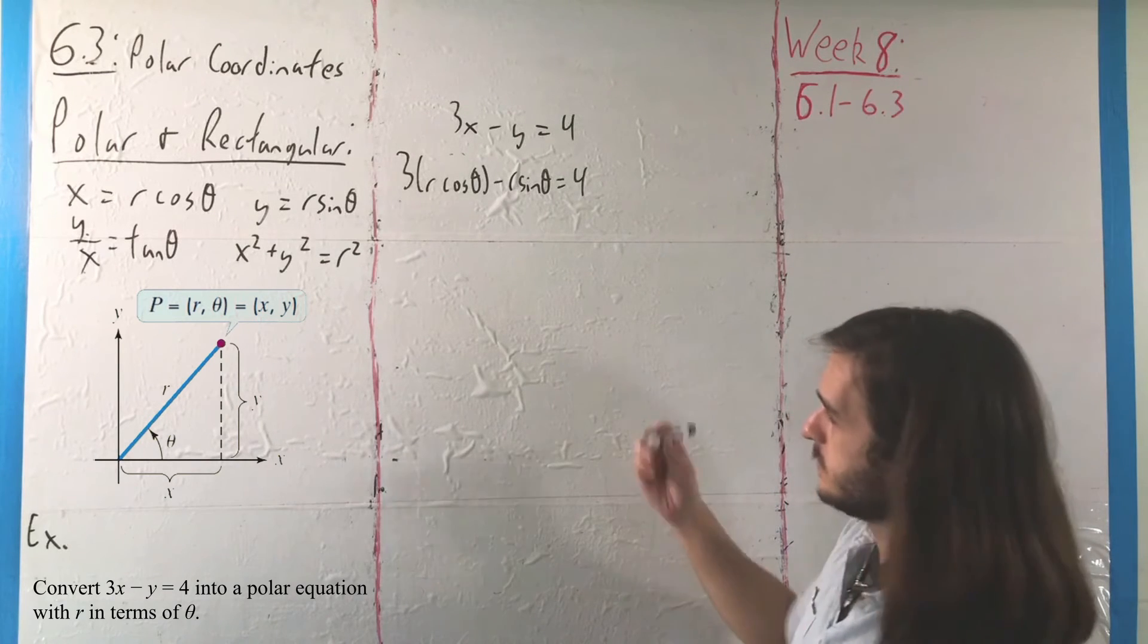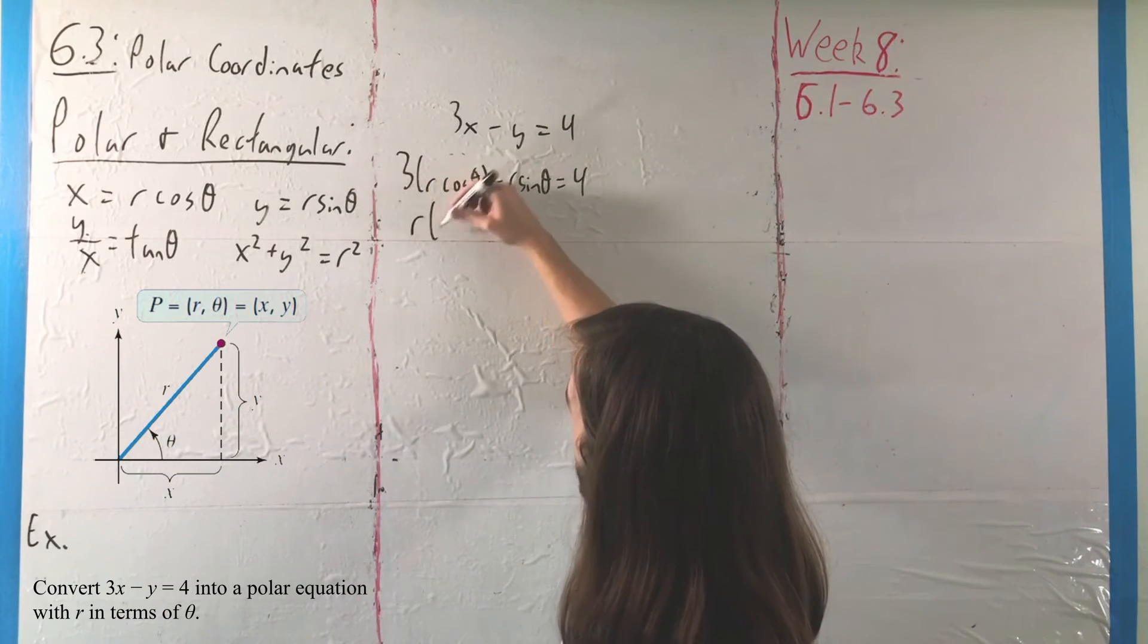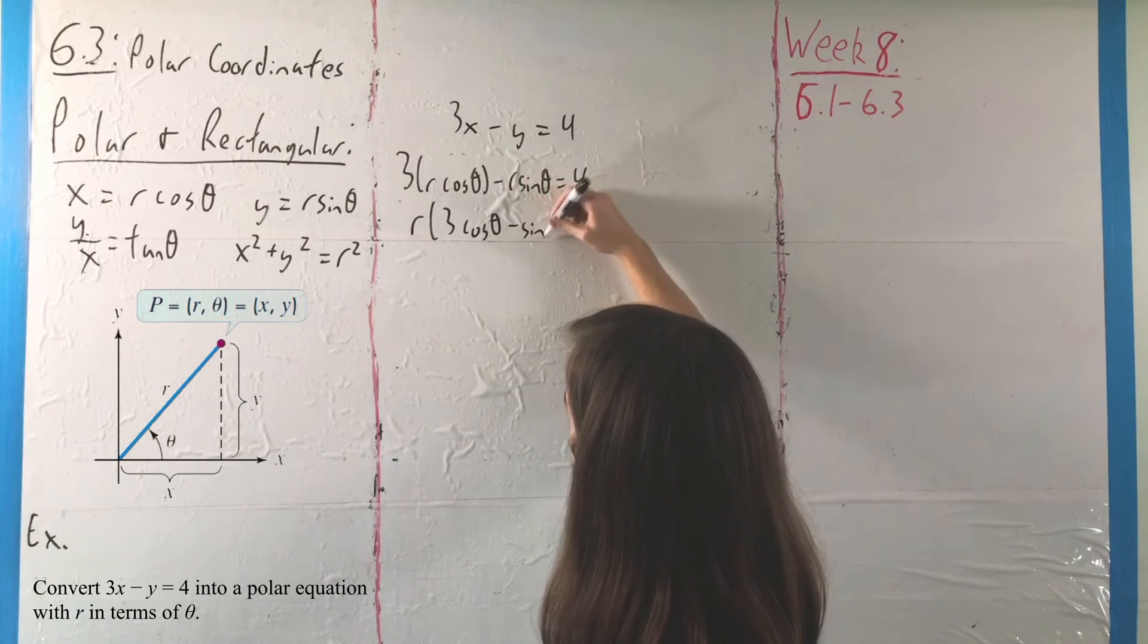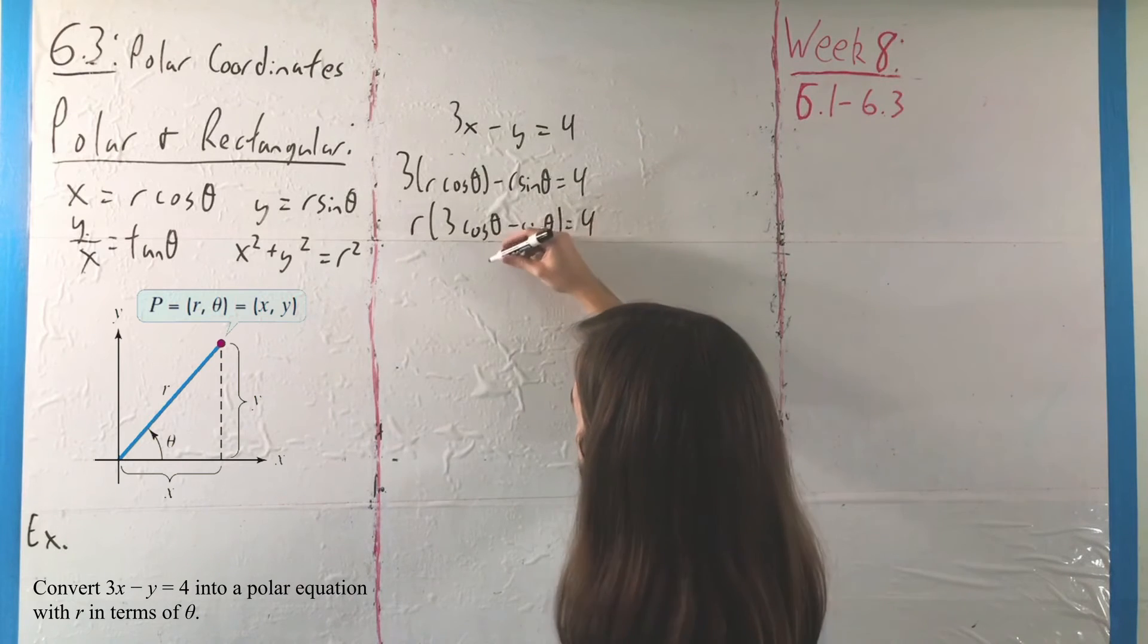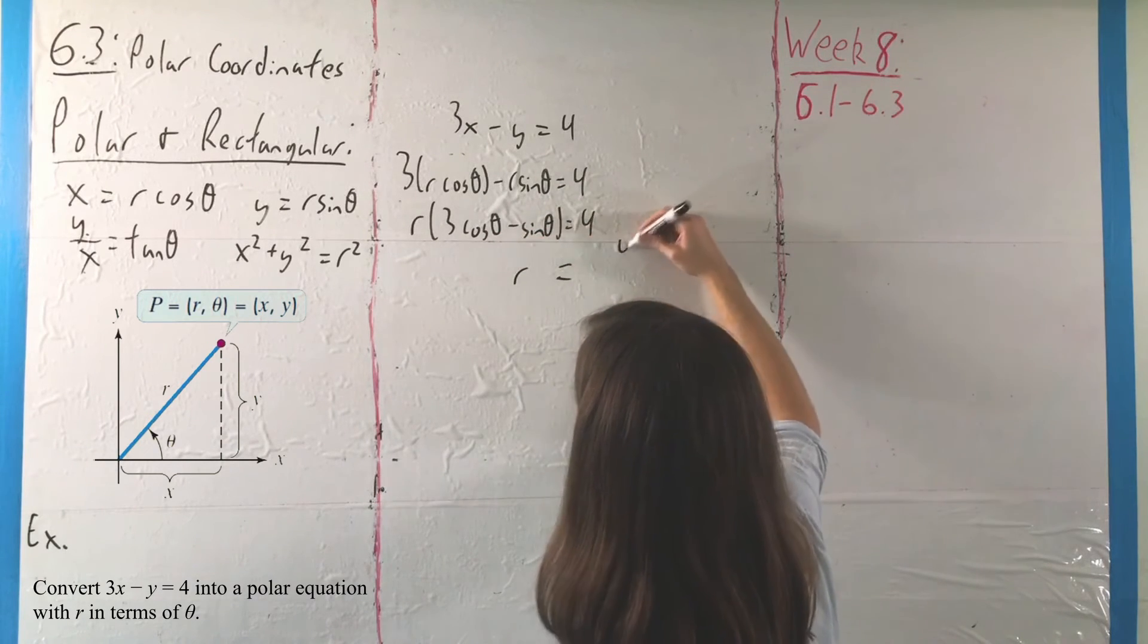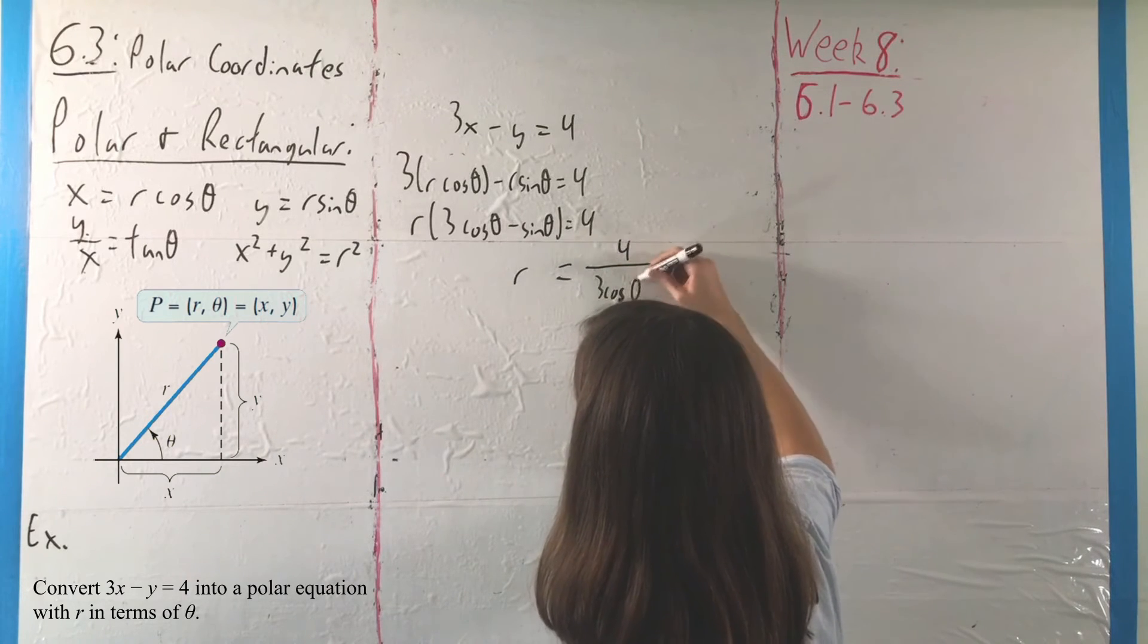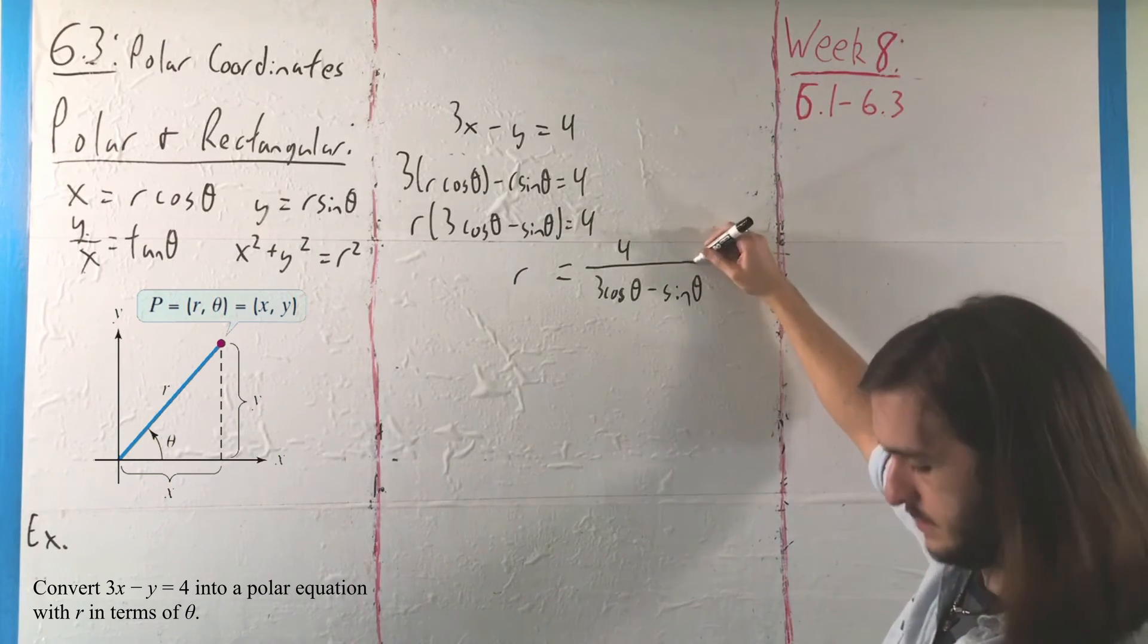Then we're going to factor out an R. We'll get R times 3 cosine of theta minus sine of theta equals 4. And then we will have, for our final answer, R is equal to 4 over 3 cosine of theta minus sine of theta.